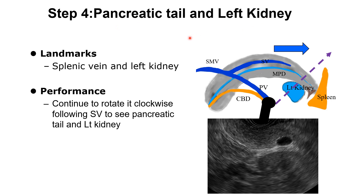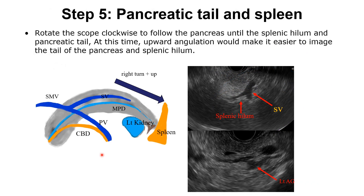Step 4: Pancreatic tail and left kidney. Continuing clockwise rotation and following the splenic vein, we can see the pancreatic tail and left kidney. Step 5: Pancreatic tail and spleen. Rotating the scope further, observe the pancreas until the splenic hilum. Upward angulation makes it easier to image the pancreatic tail and the splenic hilum. We can see the splenic hilum and the splenic vein dividing. We can also see the left adrenal gland by rotating the scope.